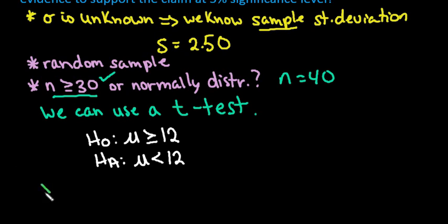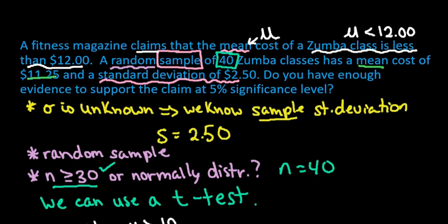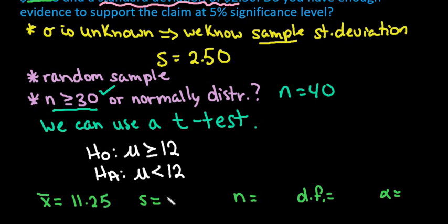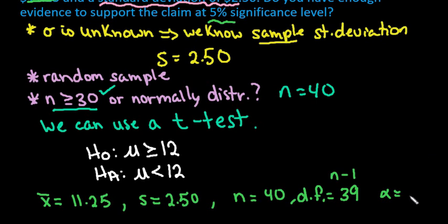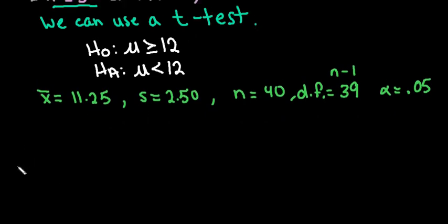Now let's write down the information we know. We need x-bar, s, n, degrees of freedom, and our alpha level. X-bar, the sample mean, is $11.25. S is $2.50. n is 40. Degrees of freedom is n minus 1, so 39. Our alpha is the significance level — at 5% significance, we write this as 0.05. If you can't use technology, I would use the rejection region decision rule rather than a p-value because it's easier to work with.